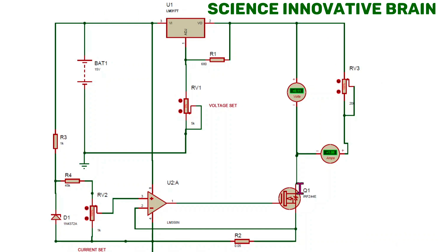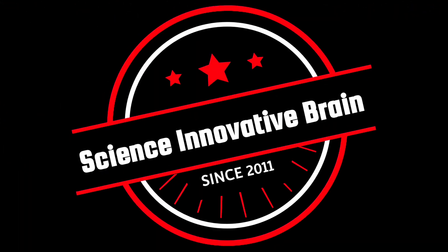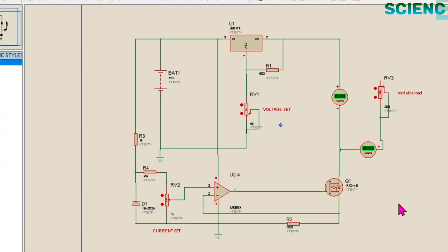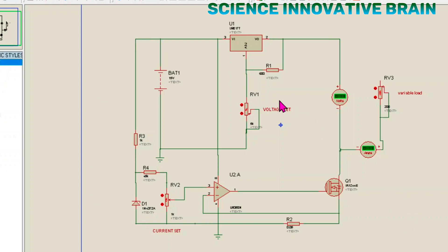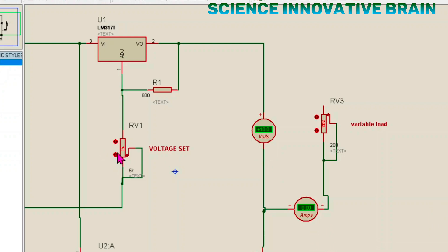Here is the circuitry. First we will set the voltage with the help of this potentiometer. If you see the voltmeter, the voltage is showing 10 volts. With the help of this part you can increase or decrease the output voltage.